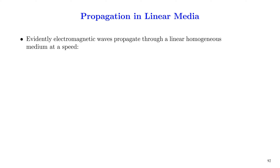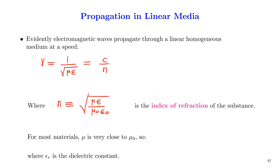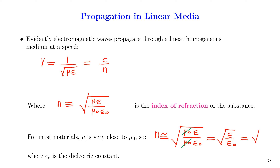Electromagnetic waves evidently propagate through linear homogeneous media at speed v = 1/√(με), which in terms of the refractive index can be written as c/n. The refractive index n is defined as √(με / μ₀ε₀). For most materials, we can take μ ≈ μ₀, so the refractive index becomes approximately √(ε/ε₀), which we call the dielectric constant of the material.